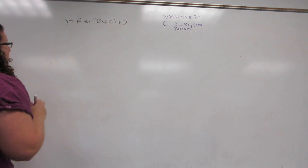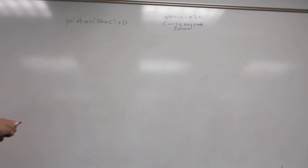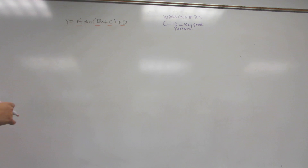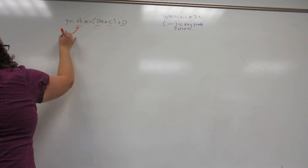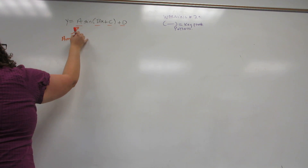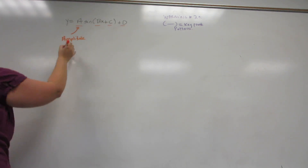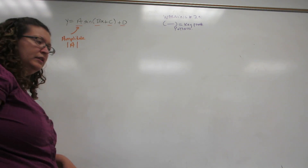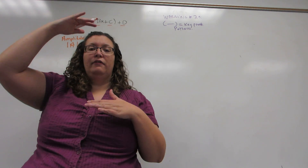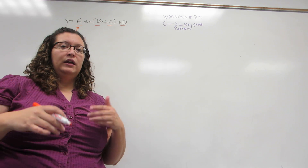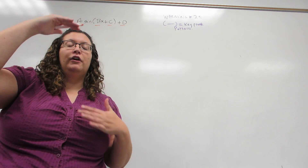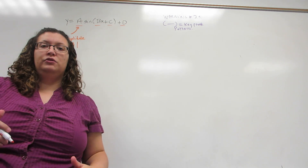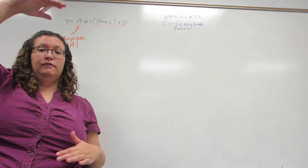For any trigonometric equation, there are four places you can modify the original graph by adding A, B, C, or D. A will change the amplitude, because the amplitude is always the absolute value of A. Amplitude means how tall the graph is. For sine, the amplitude is one-half of the height — it's the difference from the center to the top or from the center to the bottom, but it's not the height of the total graph.